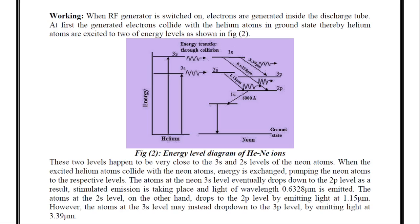Whenever we switch on the RF generator, electrons are generated inside the discharge tube. They will collide with the helium atoms in ground state and this helium atom in ground state will be transferred to the excited state. There it will collide with the neon atoms. Their energy is exchanged—neon atoms will grab that energy from excited helium atoms and they will go to the respective excited states, that is 3s and 2s states.